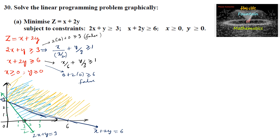We obtain an open shaded region. The boundary points are (0, 3) and (6, 0). The shaded region satisfying both inequalities has these two points as its boundaries.